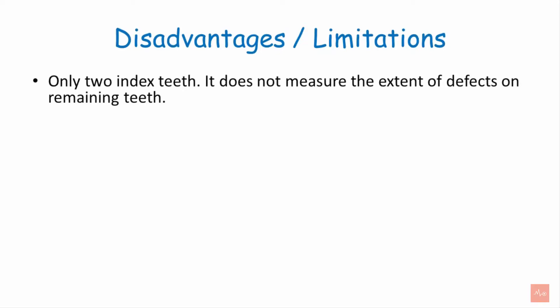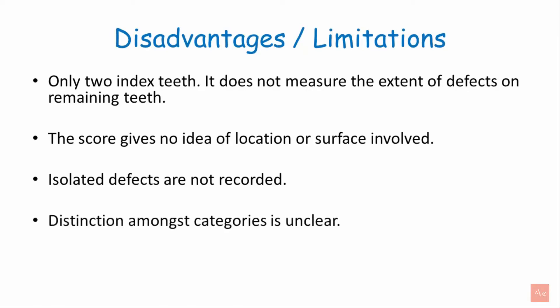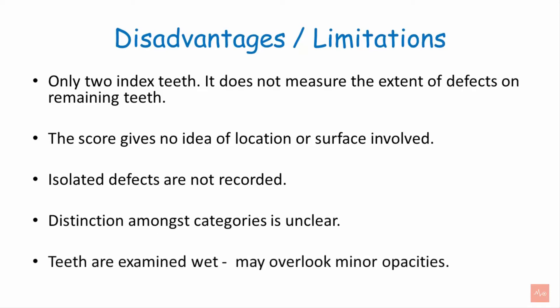The disadvantages of this index include: it only records the two index teeth and does not measure the extent of defects on remaining teeth. The score gives no idea of location or surface involved. Isolated defects are not recorded, so we cannot determine which specific area or tooth is involved. The distinction among categories is unclear, and minor opacities may be overlooked during examination.